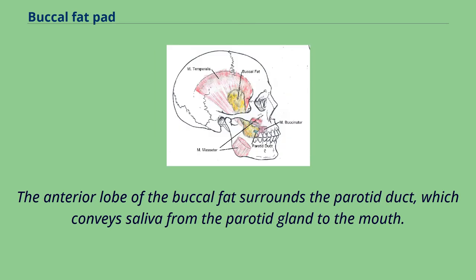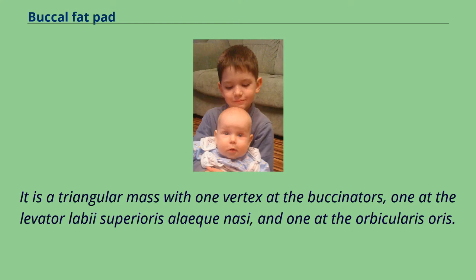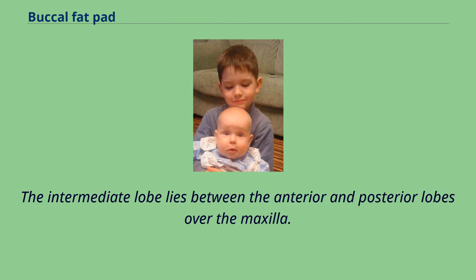The anterior lobe of the buccal fat surrounds the parotid duct, which conveys saliva from the parotid gland to the mouth. It is a triangular mass with one vertex at the buccinator, one at the levator labii superioris alaeque nasi, and one at the orbicularis oris. The intermediate lobe lies between the anterior and posterior lobes over the maxilla.